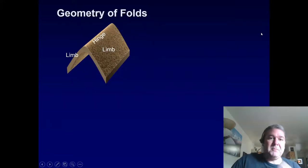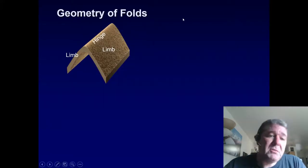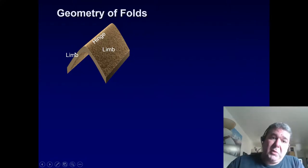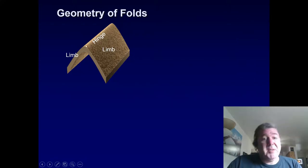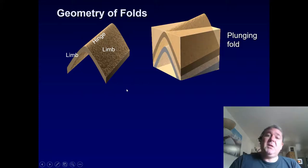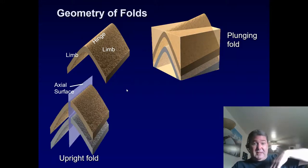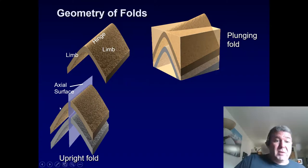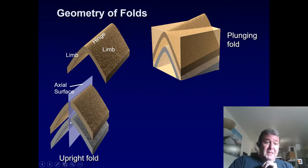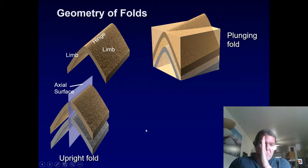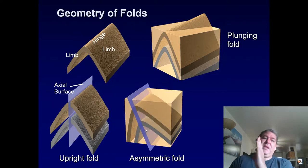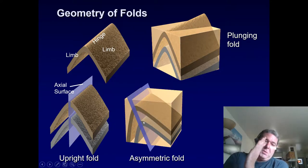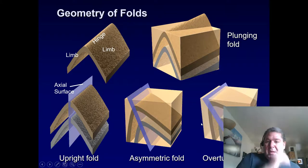Describing folds: the axis or hinge is the central line, and each side is called a limb. Folds can be upright, where the axial surface stays vertical from layer to layer; asymmetric, where the hinge lines are tilted; or overturned, where the fold is so asymmetric it has turned over on top of itself. Folds can also be plunging.